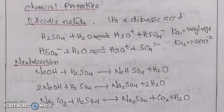Then the second dissociation: HSO4⁻ reacts with water to give H3O⁺ and SO4²⁻. The second dissociation constant Ka2 has a value of 1.2.